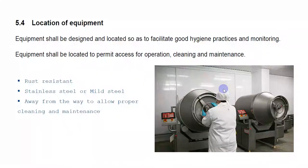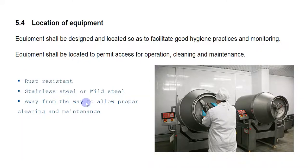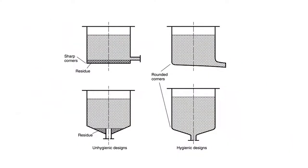Clause 5.4 is Location of Equipment. Your equipment should be rust-resistant and rust-free — you can use stainless steel or mild steel. Equipment should be placed away from the wall to allow proper cleaning and maintenance, as fixing equipment against the wall makes it very difficult to clean. Most importantly, equipment should be designed in a way that it is easy to clean.